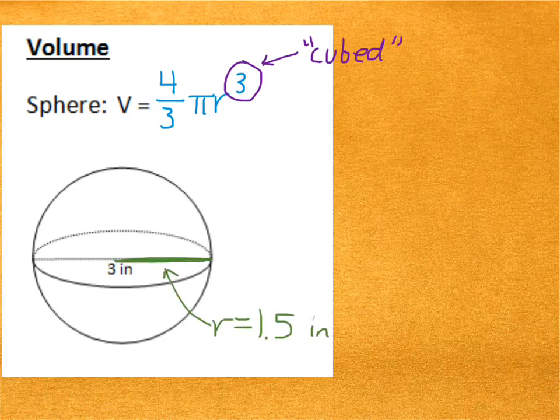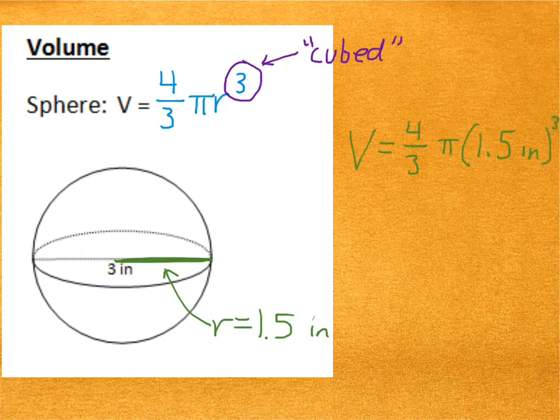Once again, my radius is 1.5 inches. So, to find the volume, I'd have 4 thirds pi times 1.5 inches cubed. If I want my answer in terms of just pi, I would calculate everything in the formula except the pi.